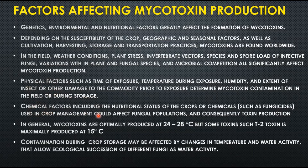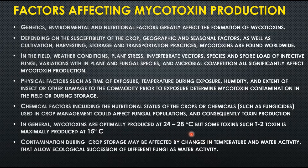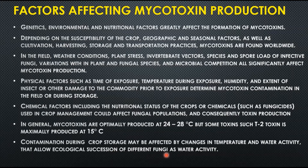Chemical factors such as nutritional status of crops or chemicals used in crop management can affect fungal populations and consequently toxin production. In general, mycotoxins are optimally produced at 24–28°C, but some toxins such as T-2 toxin are maximally produced at 15°C. Contamination during crop storage may be affected by changes in temperature and water activity that allow ecological succession of different fungi.